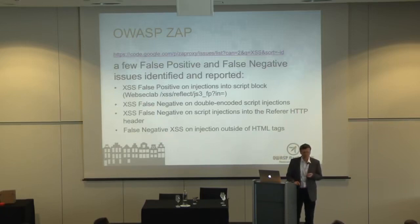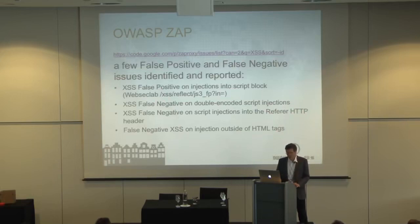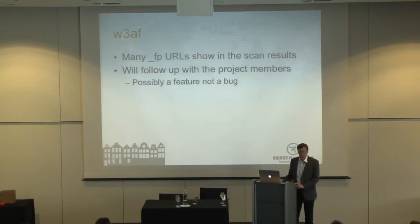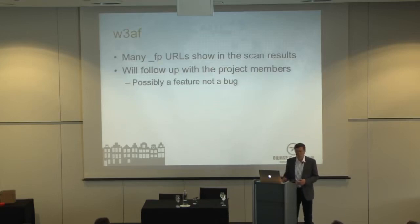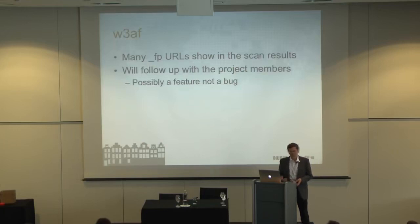This false positive is injection in a script, and it's a tricky one — it's something we suffered a lot, especially if you think about Yahoo search result pages. They need to take the user input, take the search parameter, and put it in different places including in script strings. If they're properly quoted, it's no problem, but if the scanner doesn't detect this distinction then it runs into difficulties and produces an avalanche of issues. I also ran it against W3AF and it shows many underscore FP URLs — I'm going to talk to project members about whether they'd want to improve this, or if it's a feature where they want to get as much as possible and rely on human testers to analyze it.